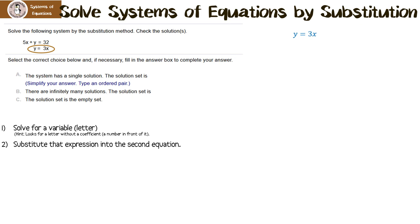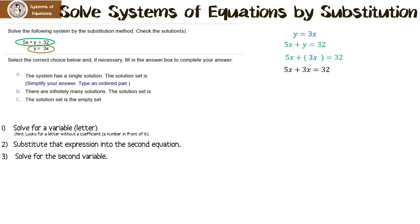The next thing we're going to do is substitute that expression into the second equation — this is the one we didn't use. What it means to substitute is: y equals 3x, so I'm going to leave a blank space for y and put 3x in for y, because y equals 3x. Now we're going to solve for x. I'm going to collect like terms first: 5x plus 3x is 8x equals 32. I want to get x by itself, so I need to divide both sides by 8. That gives me x equals 4.